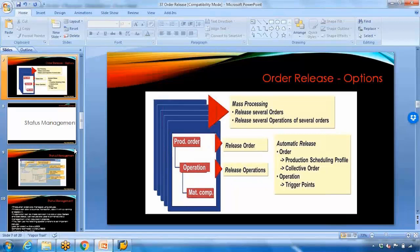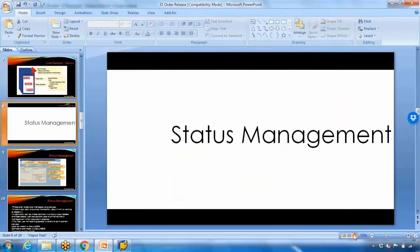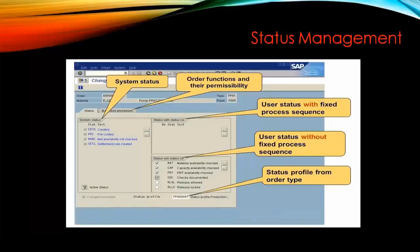In most businesses, they release at the header level directly. Now let's talk about status management. There are two types of status: one is called system status and the second is user status.